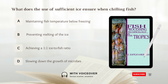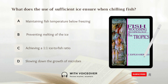What does the use of sufficient ice ensure when chilling fish? A. Maintaining fish temperature below freezing. B. Preventing melting of the ice. C. Achieving a one-to-one ice-to-fish ratio. D. Slowing down the growth of microbes. Answer: D. Slowing down the growth of microbes.